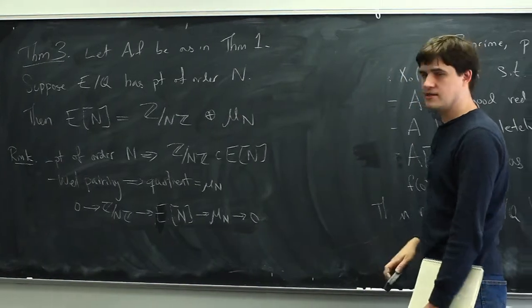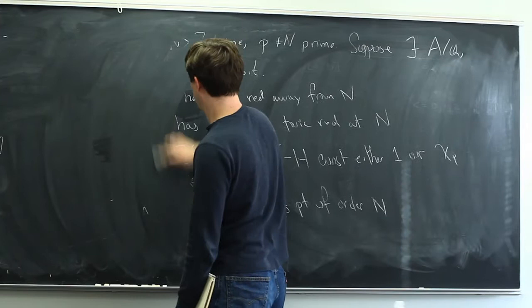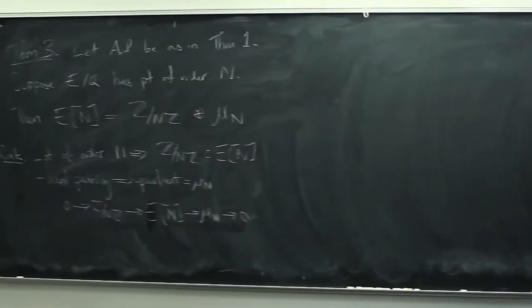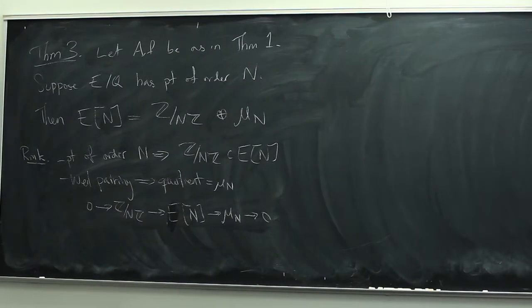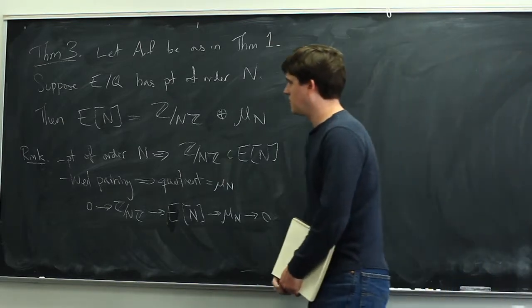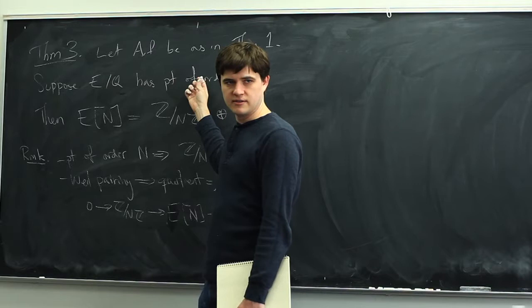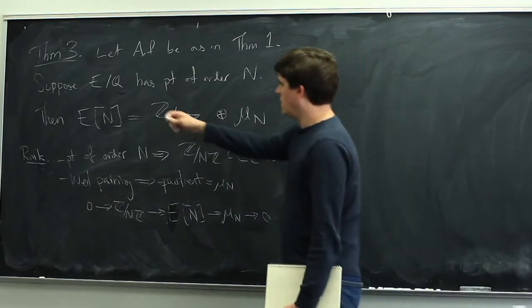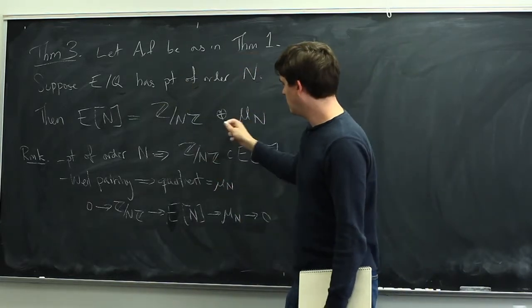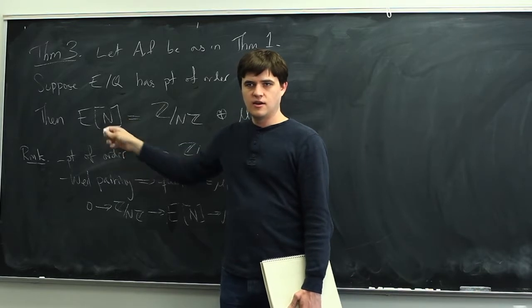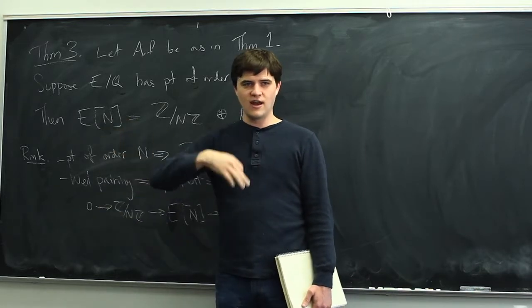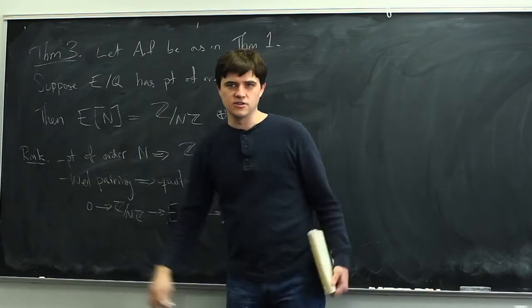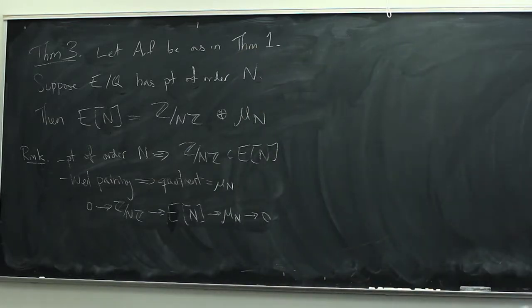First I want to explain why Theorem 3 implies Theorem 1, then we'll prove Theorem 3. We proceed by contradiction since Theorem 1 says no such elliptic curve with a point of order n exists, and Theorem 3 says something about what that hypothetical thing would look like. If you had an E over Q with a point of order n, by this theorem you'd get a μ_n inside the n-torsion, and you could quotient by that μ_n. Your point of order n would give a non-trivial point on the quotient. You keep applying this, getting a series of things, and show that can't happen.